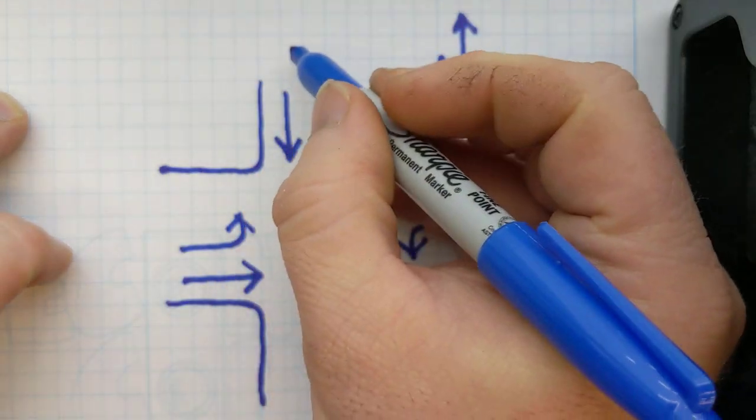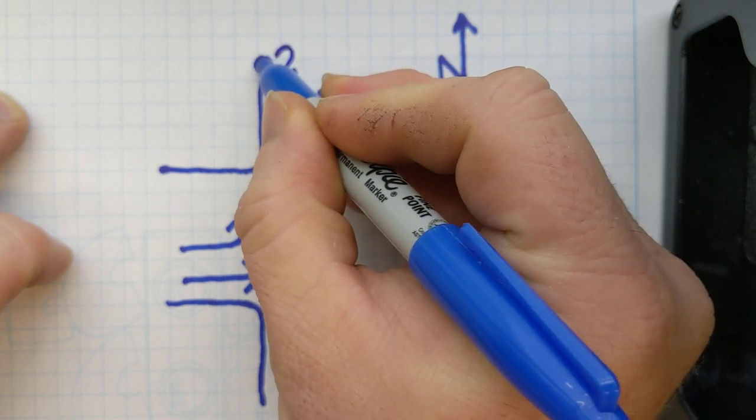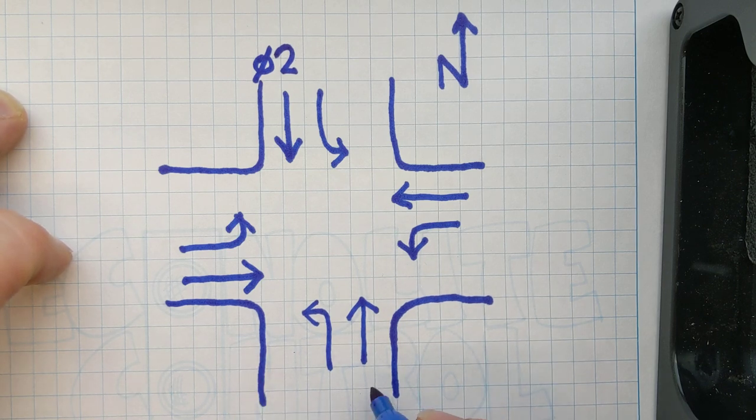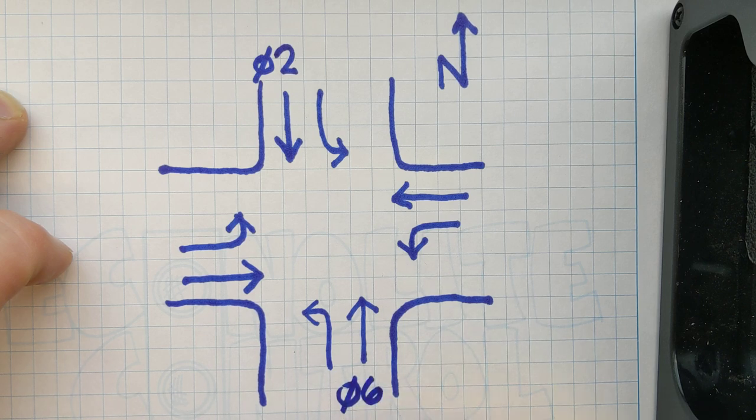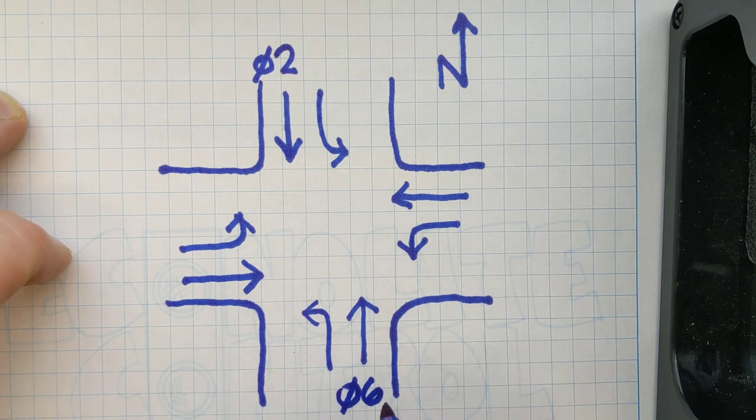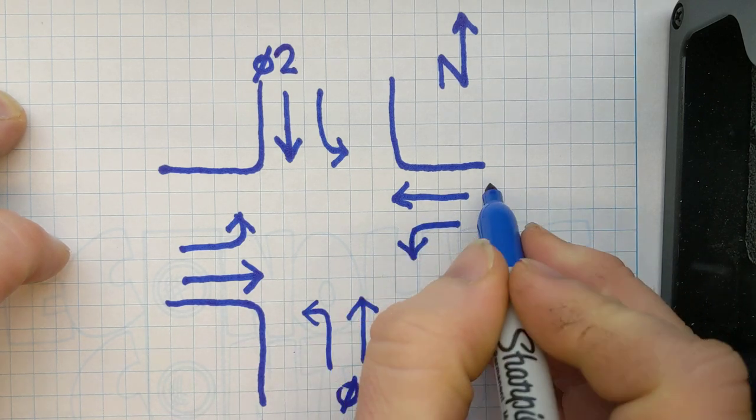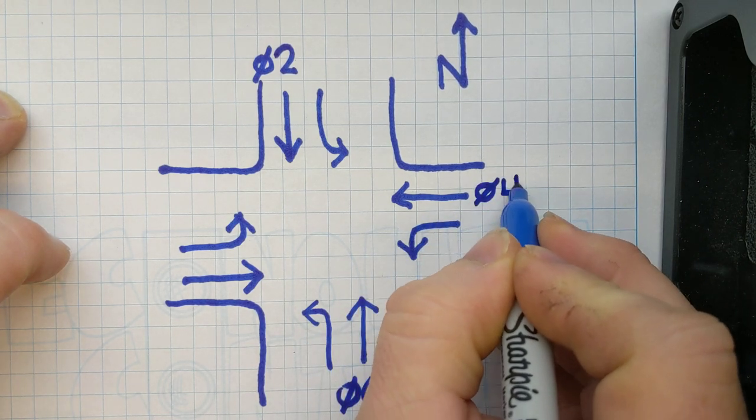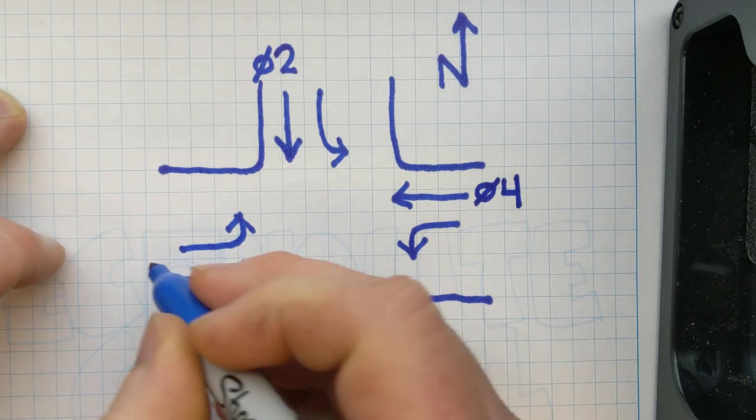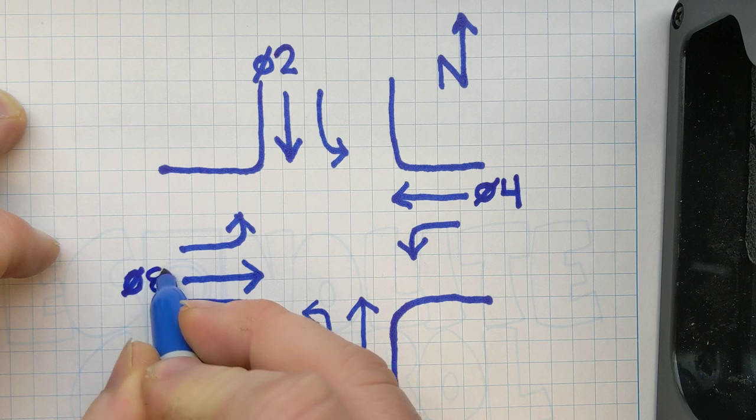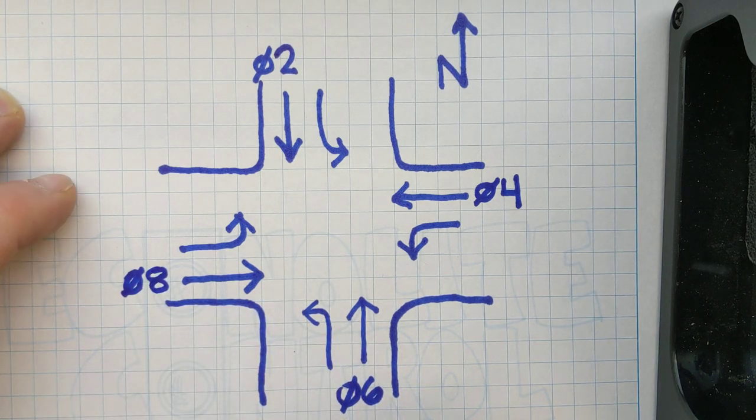So, but for the sake of this video, I'm going to say phase two is southbound. And phase six is northbound. I shouldn't have made that so big because that's a different phase for my left turn there. Phase four is westbound. Phase eight is eastbound.